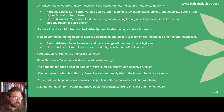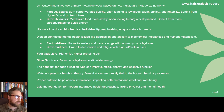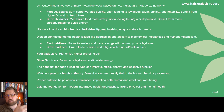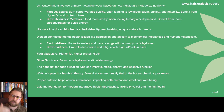Watson connected mental health issues like depression and anxiety to biochemical imbalances in nutrient metabolism. Fast oxidizers — and we are talking about extremes here — are more prone to anxiety and mood swings, especially when they consume too many carbohydrates. Slow oxidizers were prone to depression and fatigue, especially when on a high fat, high protein diet. Fast oxidizers need more fats and proteins, while slow oxidizers generally need more carbohydrates. If slow oxidizers eat higher fat and protein, it slows the oxidation rate even further, leading to depression, sluggishness and fatigue.